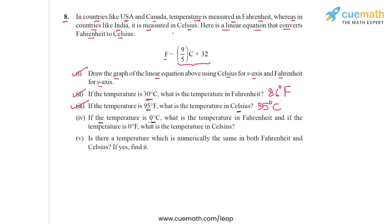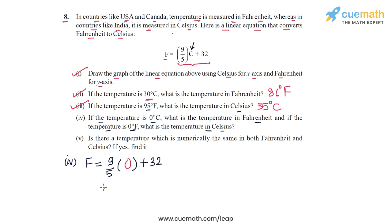Part 4 has two parts. First, if the temperature is 0°C, what is it in Fahrenheit? Substituting C = 0: F = 9/5 × 0 + 32 = 32. So 0°C equals 32°F.